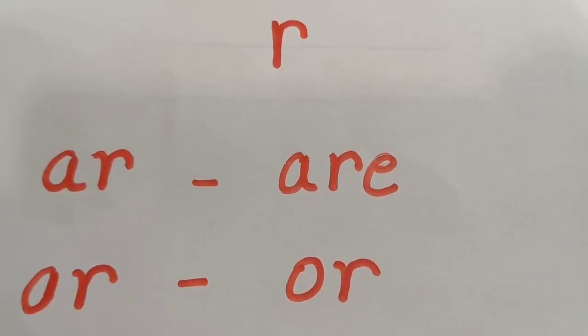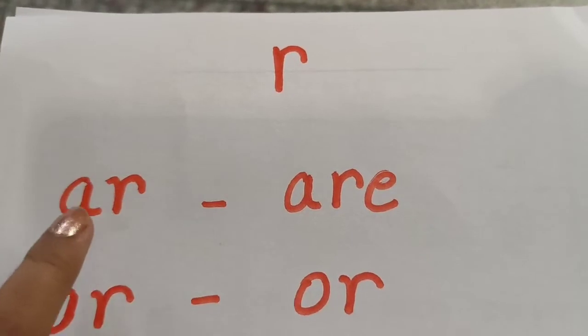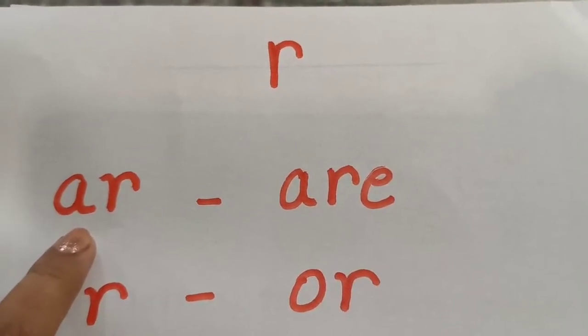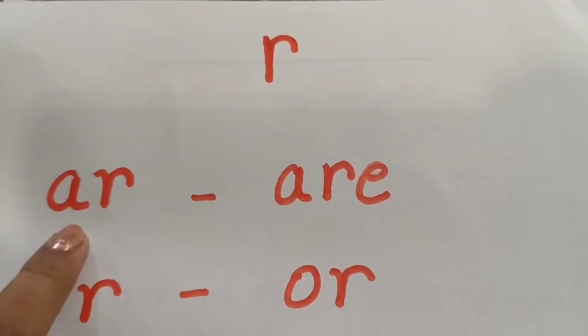First, let us take all the vowels: A, E, I, O, and U. We will see how the sound changes with each of them.